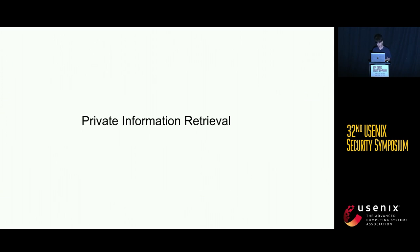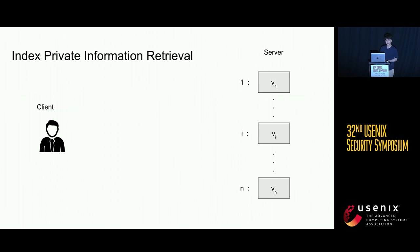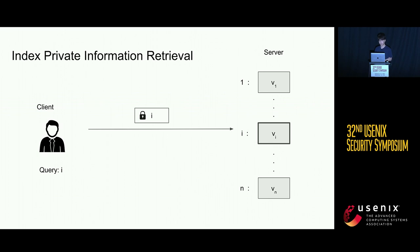What is PIR? In the index PIR problem, we consider two parties: a client and a server. The server contains n database entries that the client wants to retrieve, and each entry is associated with an index from one to n. If the client wants to query for index i, it sends some encryption of the index i to the server, which the server processes in some way to return the associated value. During this process, the server should not learn what the client has queried.